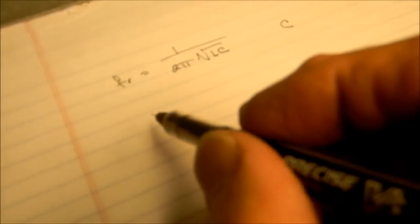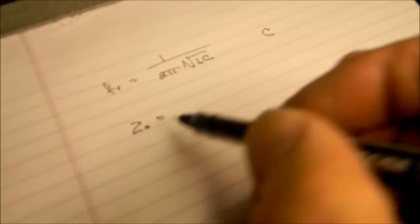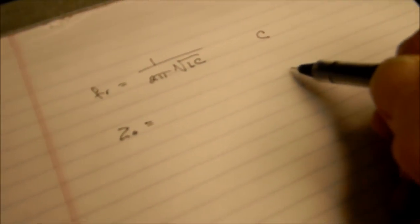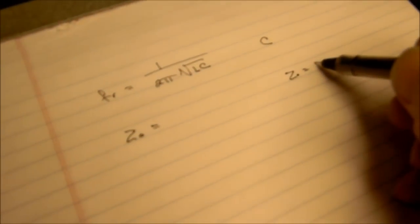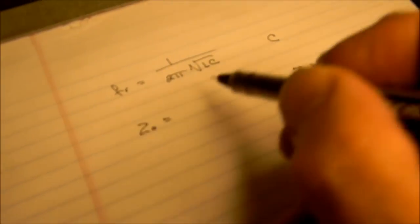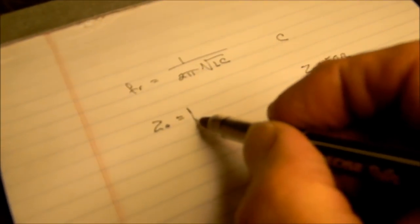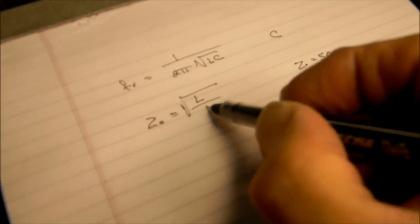The other formula we're going to be using is Z0, which is the characteristic impedance of the transmission line, which we happen to know already. Z0 equals 50 ohms, equals the square root of L over C.